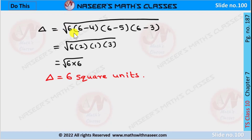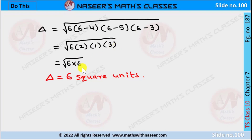Now we substitute S and the side values into Heron's formula. Delta equals the square root of 6 times (6 minus 4) times (6 minus 5) times (6 minus 3). Here 6 minus 4 is 2, 6 minus 5 is 1, and 6 minus 3 is 3. Multiplying 2 times 1 times 3 gives 6, so we get the square root of 6 times 6, which equals 6. Therefore the area delta is equal to 6 square units.